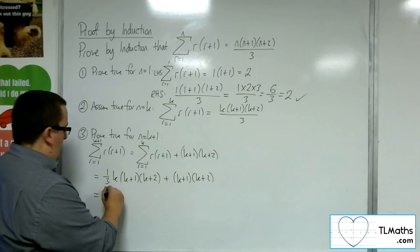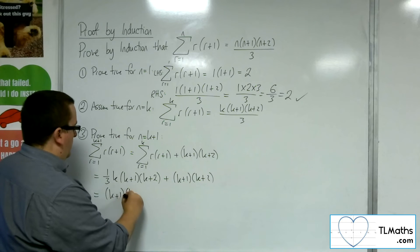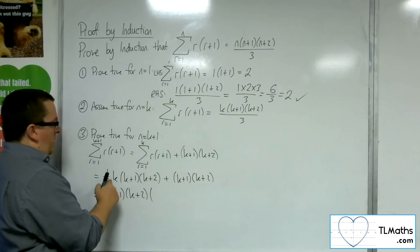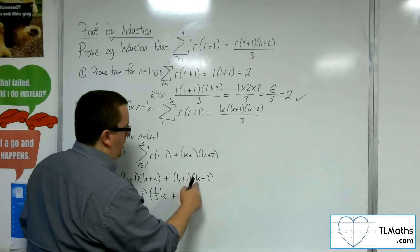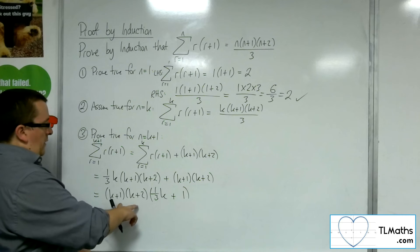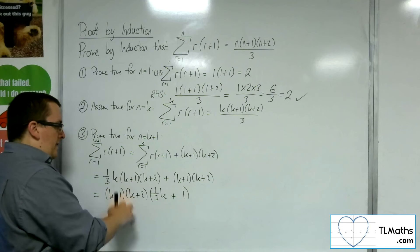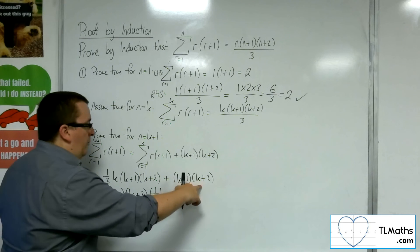So k plus 1, k plus 2, and in the bracket we're going to have a third k plus 1, for that term. So those two brackets times that will get me there, and those two brackets times the 1 gets me there.